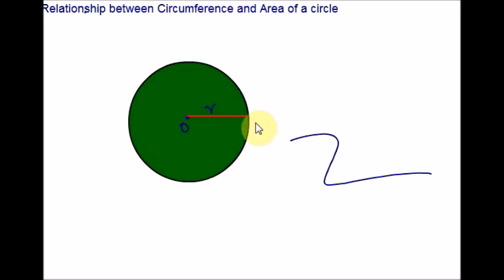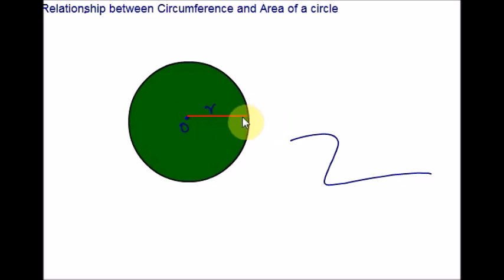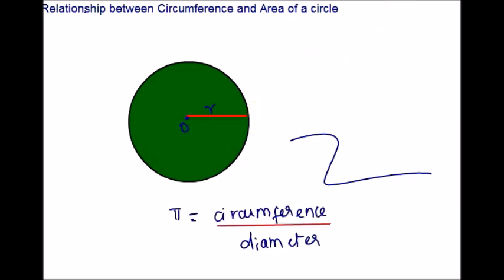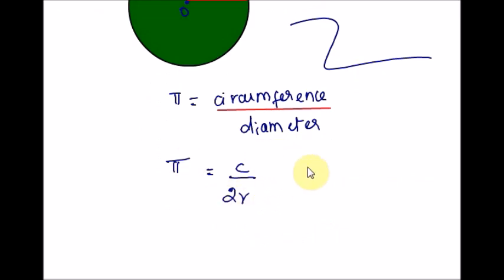Pi is defined as the ratio of the circumference of a circle to its diameter, and this ratio is the same for every circle. Consider a circle with radius r and circumference C. Since the diameter is two times the radius, by cross multiplication we get C = 2 pi r. This is the formula derivation for circumference.